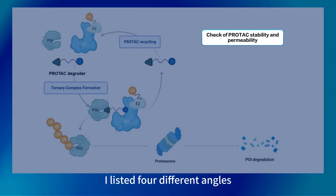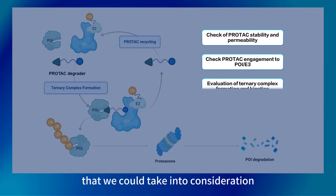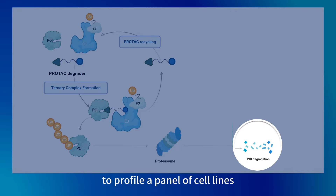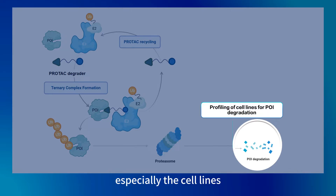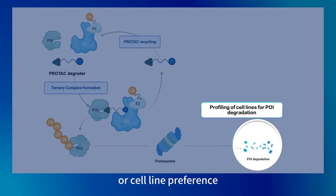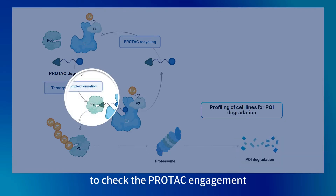There are four different angles to take into consideration. The first would be to profile a panel of cell lines — especially cell lines with different expression levels of your protein of interest — and check the POI degradation to see if the degradation has a certain pattern or cell line preference.